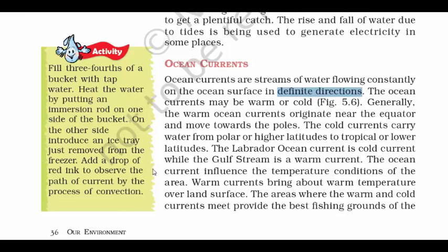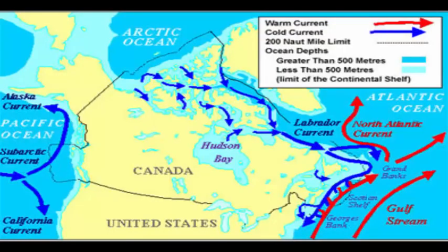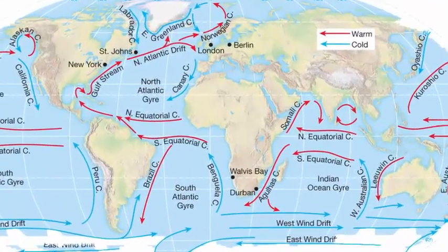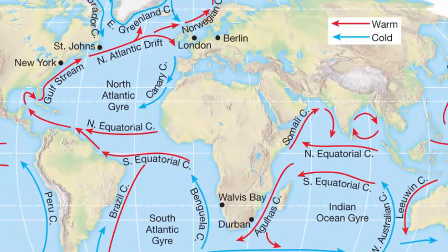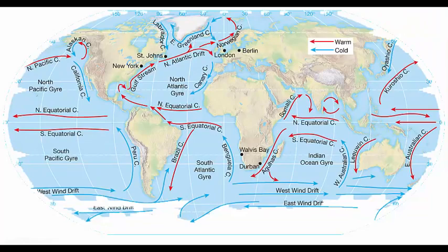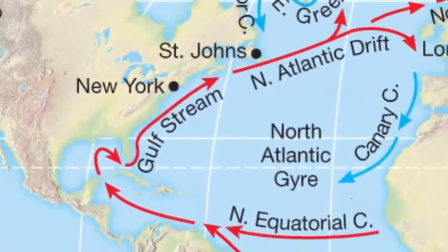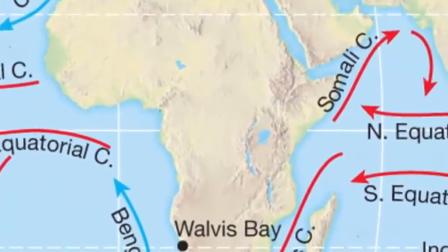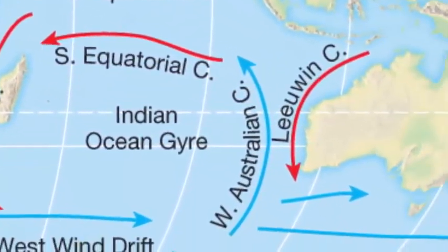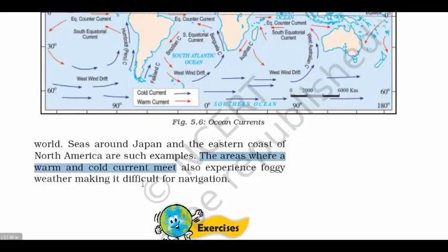Ocean currents have a huge influence on the temperature of nearby areas. If the ocean current is cold, the landmass near it will have cold weather — for example, Canada, where all nearby ocean currents are cold, making it freezing there. Similarly, warm currents bring warm temperatures to nearby landmasses. The areas where warm and cold currents meet provide the best fishing grounds in the world. However, these meeting zones also experience foggy weather, making navigation difficult.